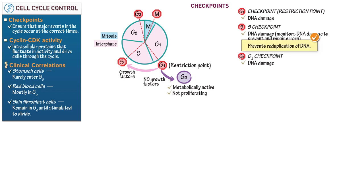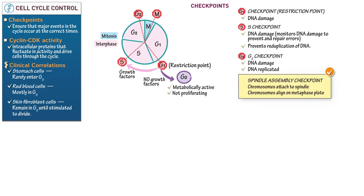Indicate that the S checkpoint also prevents reduplication of DNA. Show that the G2 checkpoint checks that DNA is fully replicated before the cell enters mitosis. Finally, indicate that the spindle assembly checkpoint makes sure that all chromosomes attach to the spindle and align on the metaphase plate so that each daughter cell receives a full set of chromosomes. Each of these checkpoints prevents errors by ensuring that later events in the cycle cannot begin until earlier events occur.